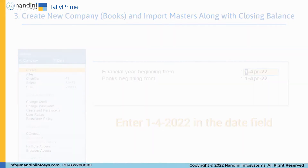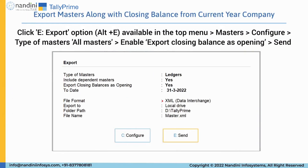To export masters along with closing balances from the current year company, click the Export option available in the top menu, then Masters, Configure, and Types of Masters — All Masters. Enable Export Closing Balance as Opening and press Send.